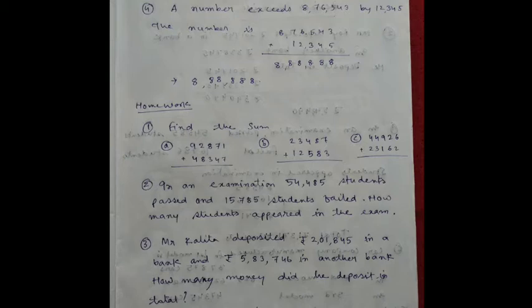Find the sum: 2,871 plus 48,347. Number B: 23,487 plus 12,583. Number C: 44,926 plus 23,162.